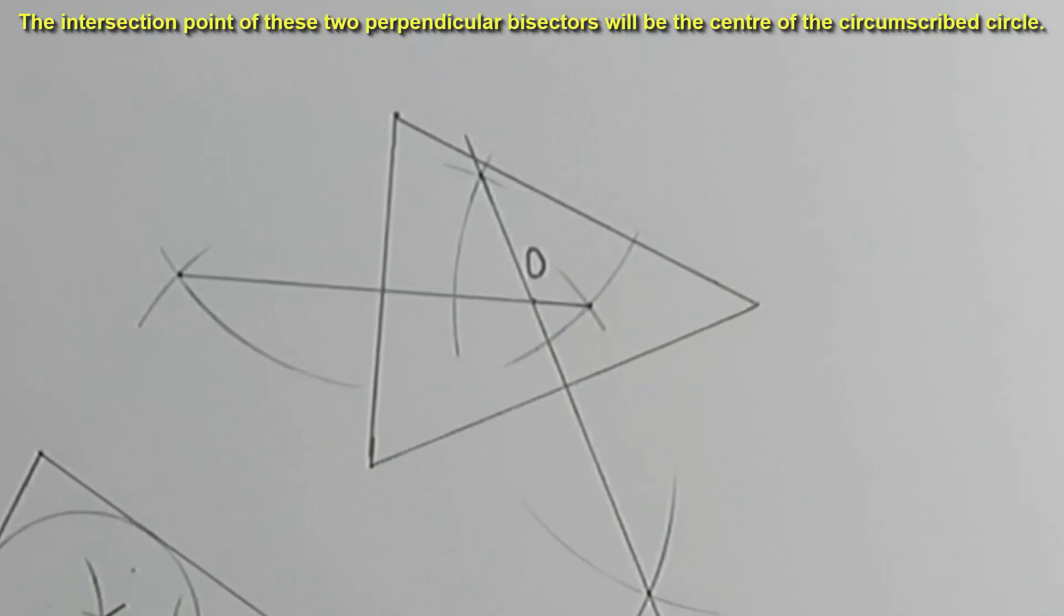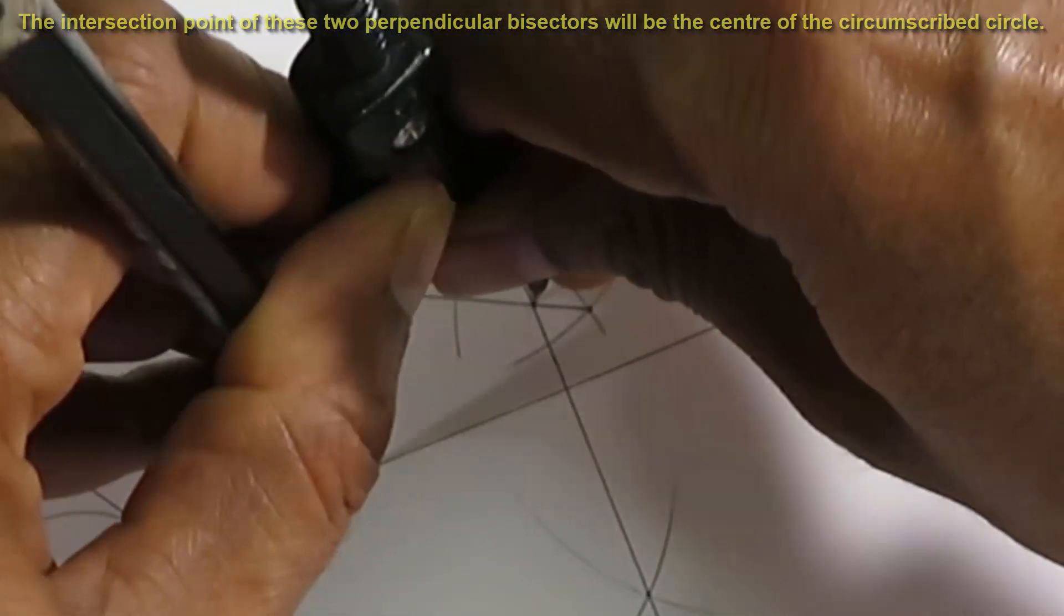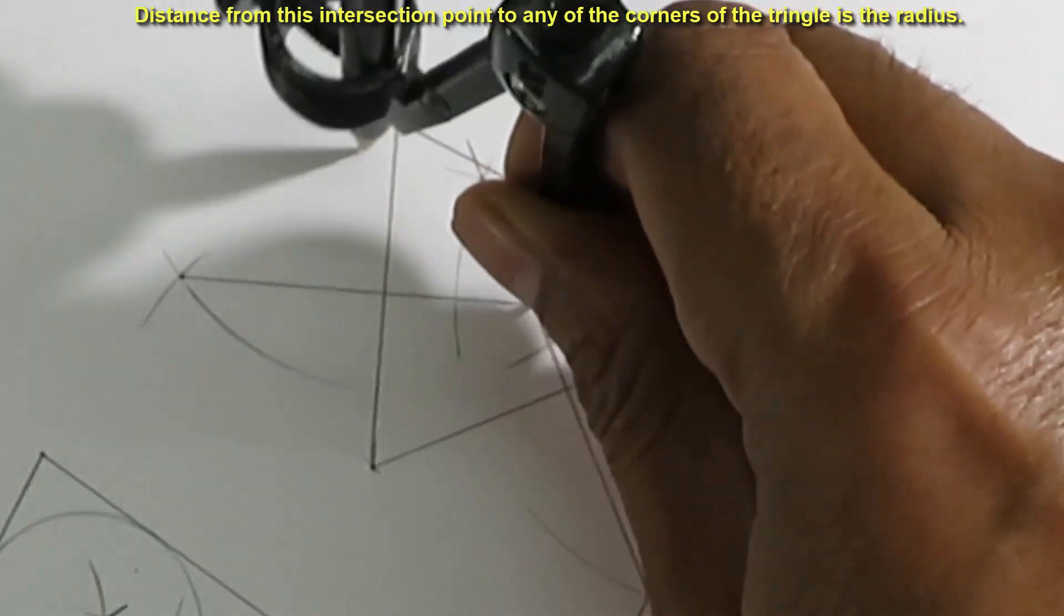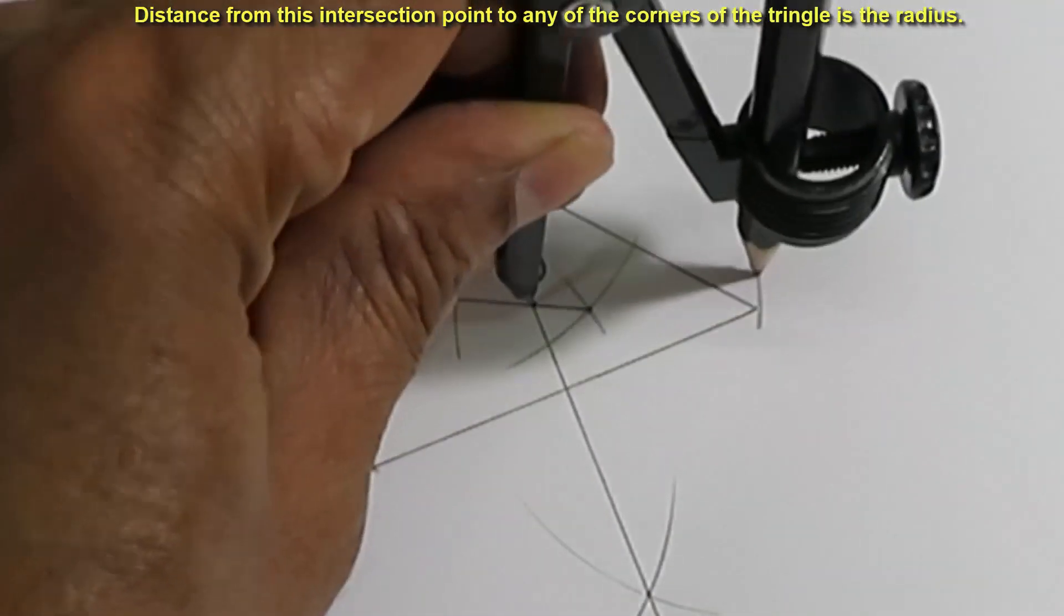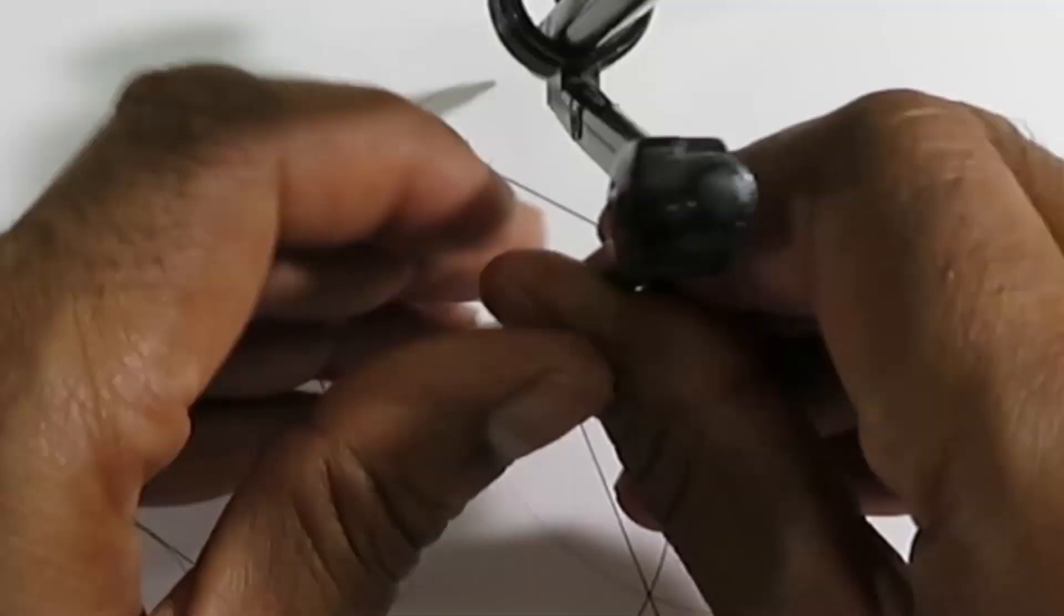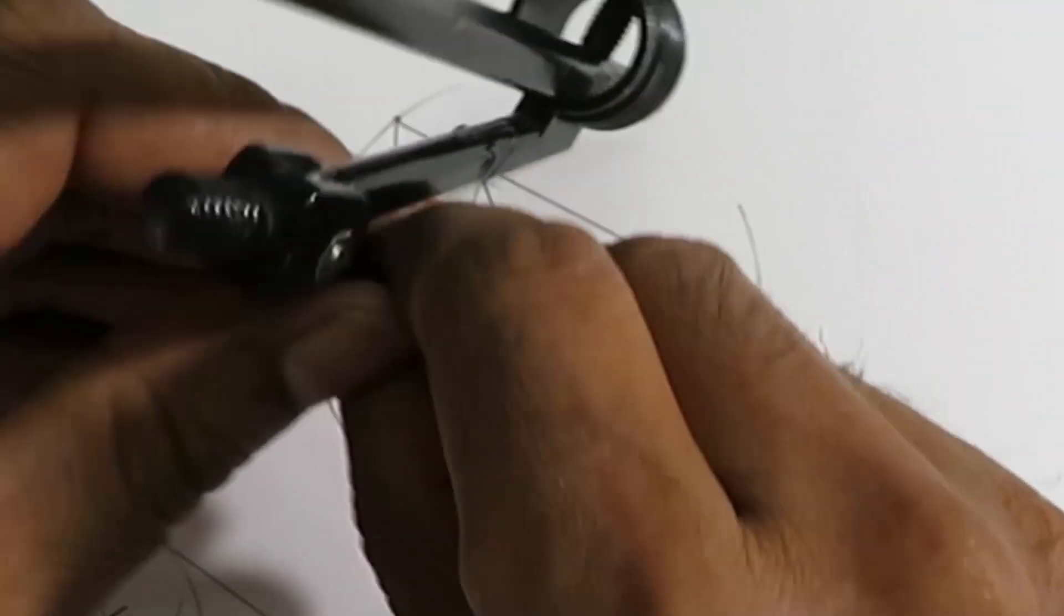The intersection point of these two perpendicular bisectors will be the center of the circumscribed circle. Distance from this intersection point to any of the corners of the triangle is the radius.